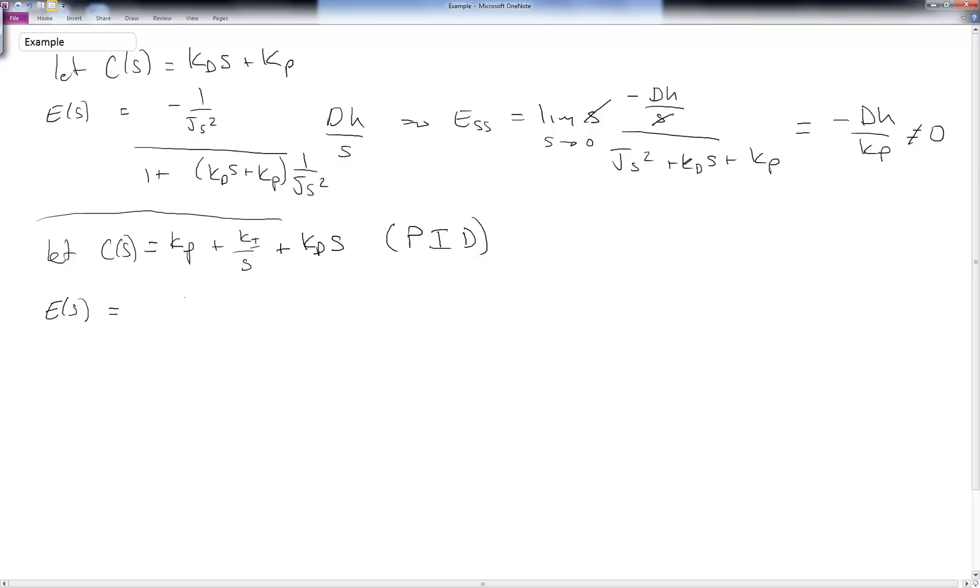We see that e of s ends up being minus one over j s squared all over one plus kp plus ki over s plus kd times s. All that times one over s, all that times one over j s squared times the disturbance, which is dh over s.